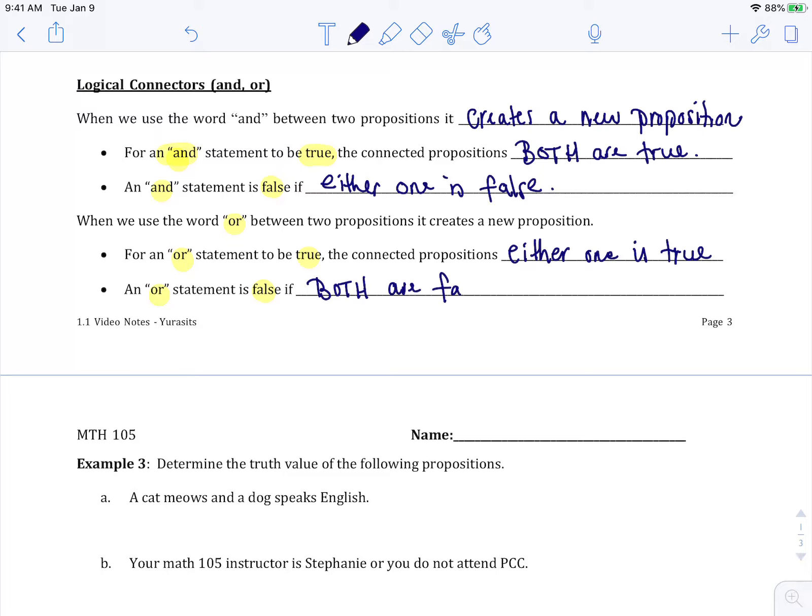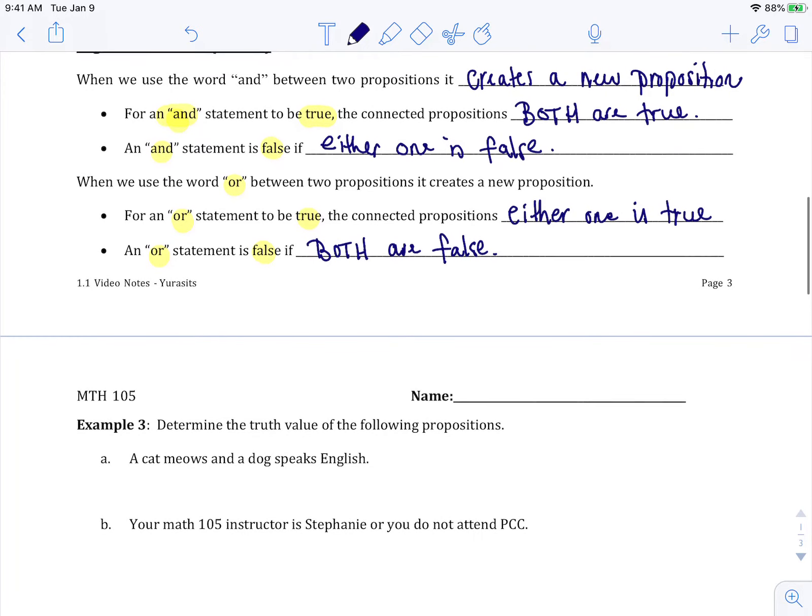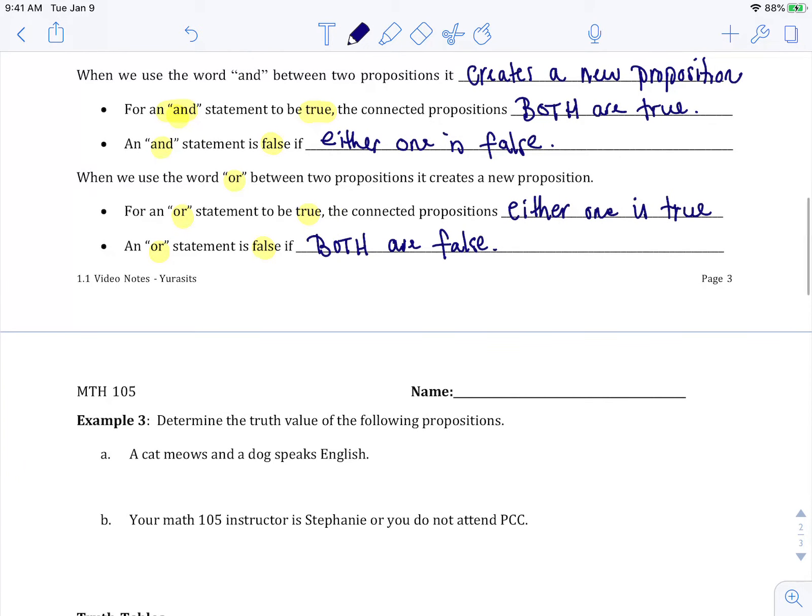So let's see what in the heck do I mean. When I go to this example three, I'm actually not going to move it up so I can refer to these notes we took. It says determine the truth value of the following propositions. A cat meows and a dog speaks English. I'm just going to focus on my AND rules, which are right here.